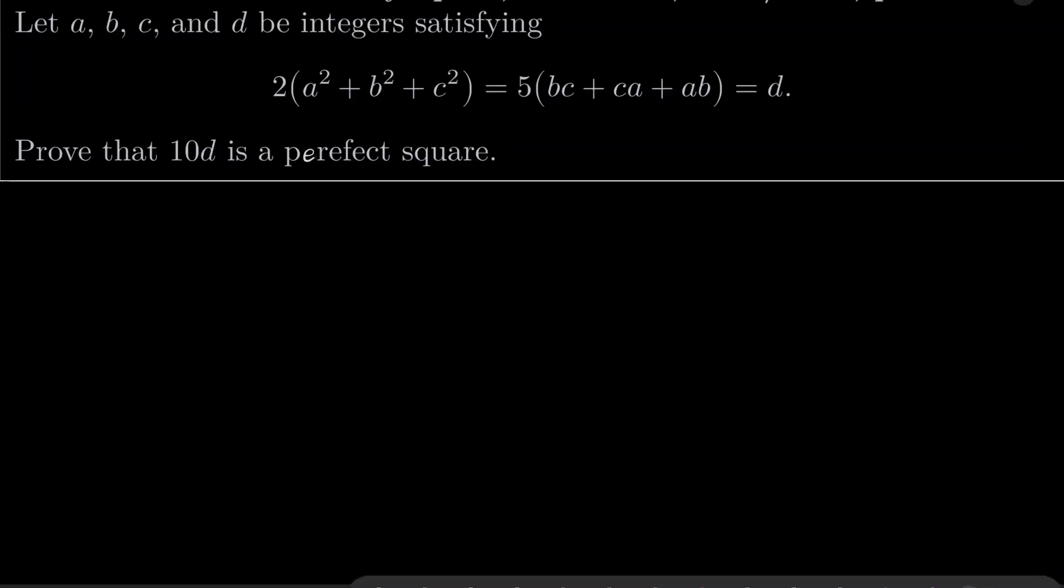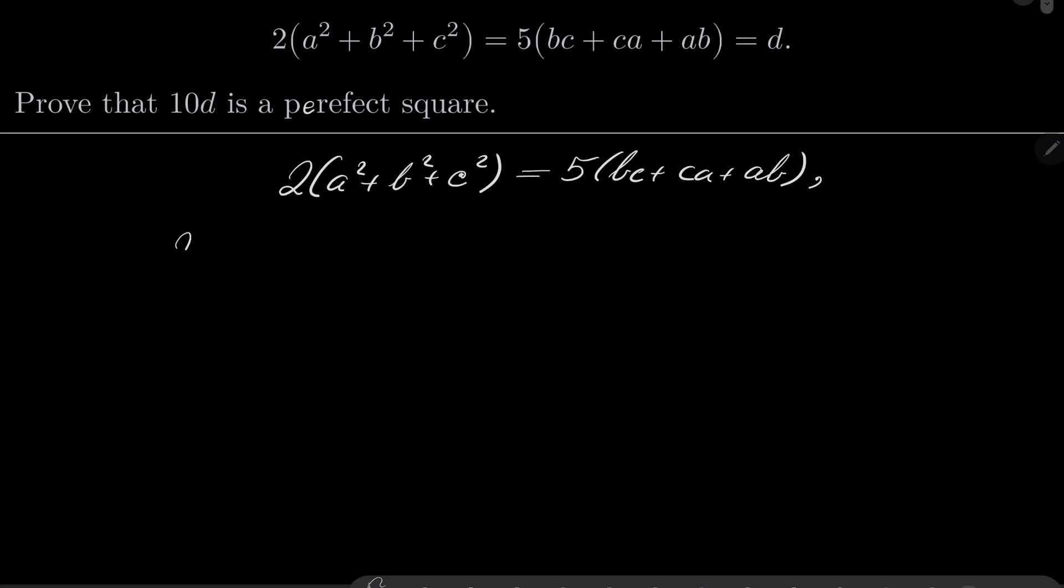All right. Let's take our assumption: 2(a² + b² + c²) = 5(bc + ca + ab). Now, instead of a² + b² + c², I will substitute 2(a + b + c)² - 2(bc + ca + ab) = 5(bc + ca + ab).